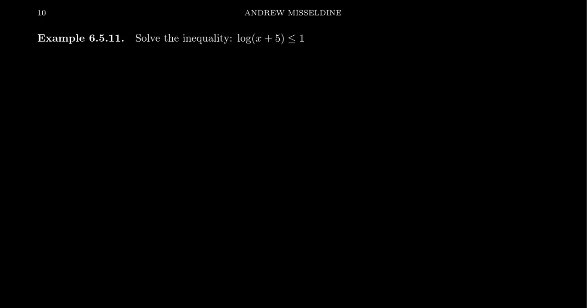I should also mention logarithmic inequalities. Similarly, inequalities involving logarithms can be solved by switching to exponential form. One also has to be careful: because the domain of the logarithm is often restricted, it's important not to include values of x outside the domain of the logarithm. We also have to worry about the base — if base greater than one, it's increasing and the inequality stays the same; if the base is between zero and one, it switches direction. In addition, pay attention to the domain: here, x plus 5 has to be greater than zero, so x has to be greater than negative 5. That's a restriction on the solution set.